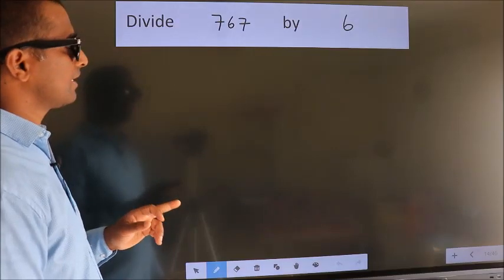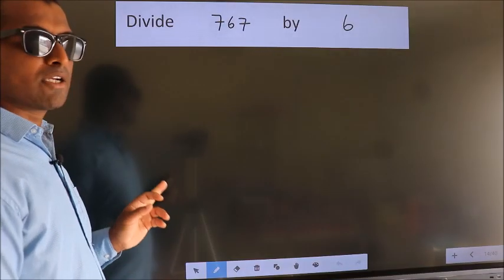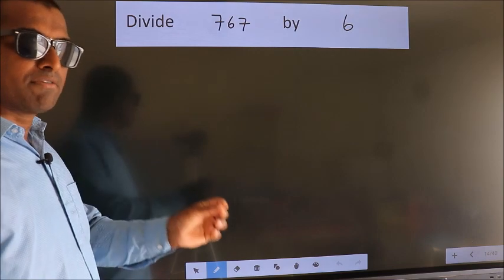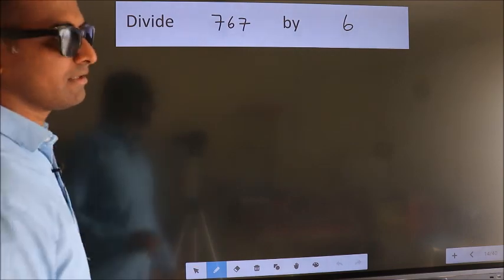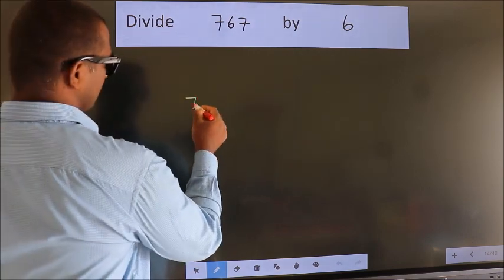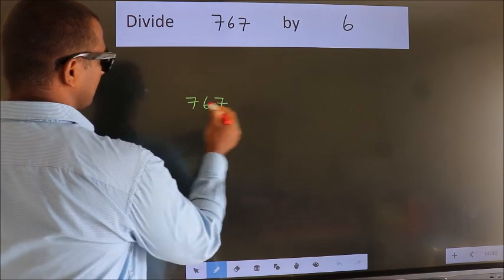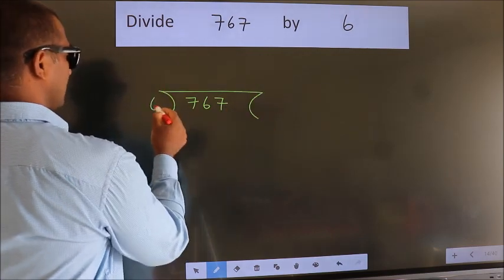Divide 767 by 6. To do this division, we should frame it in this way. 767 here, 6 here.